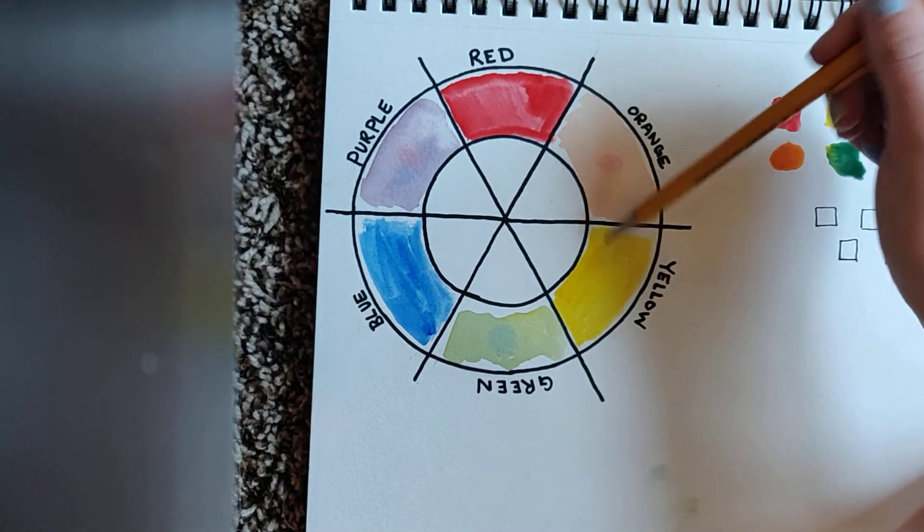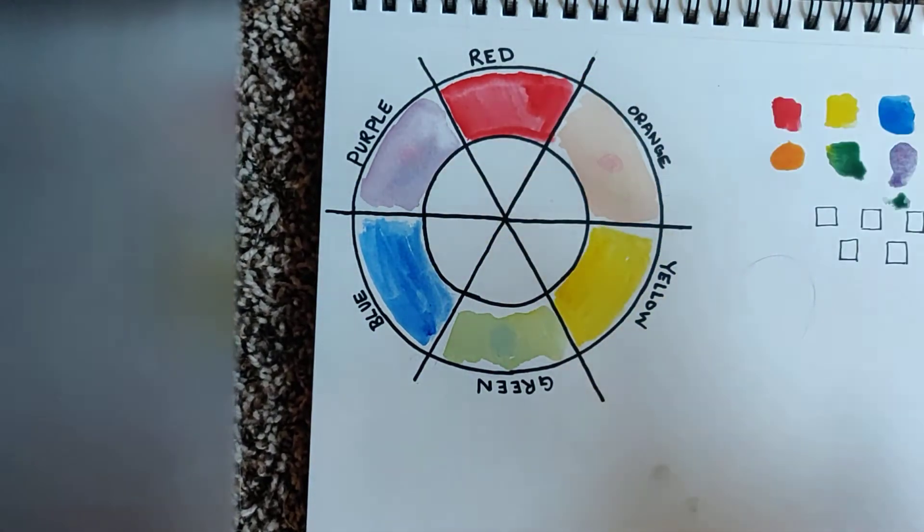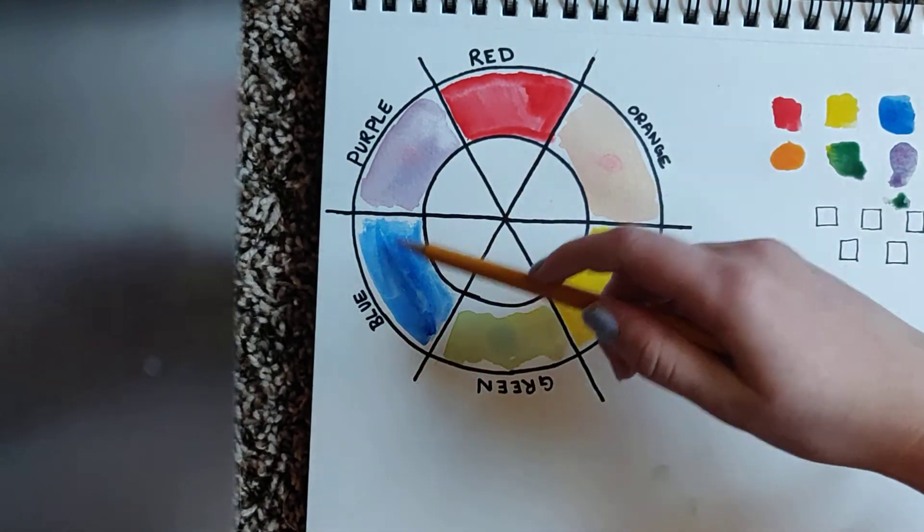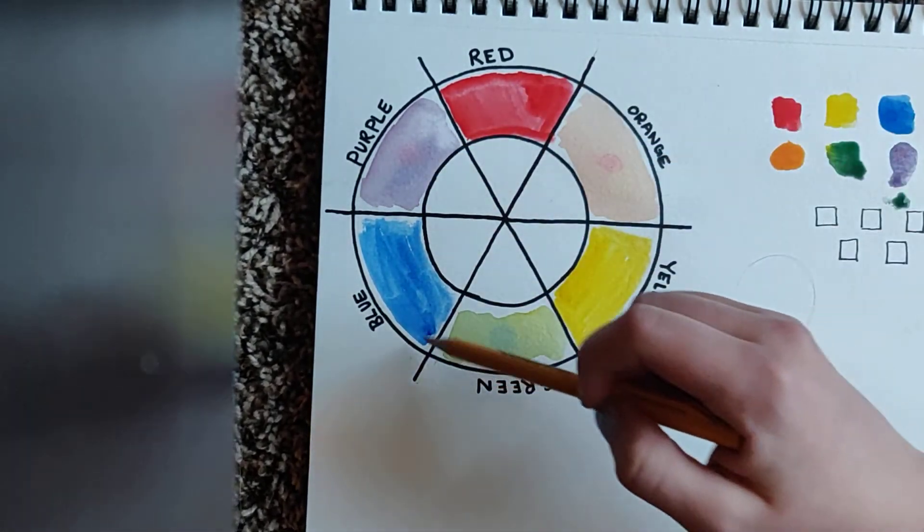When you mix red and yellow, you get orange. When you mix yellow and blue, you get green. When you mix blue and red, then purple's what you get. Use the color wheel to show us what we need.